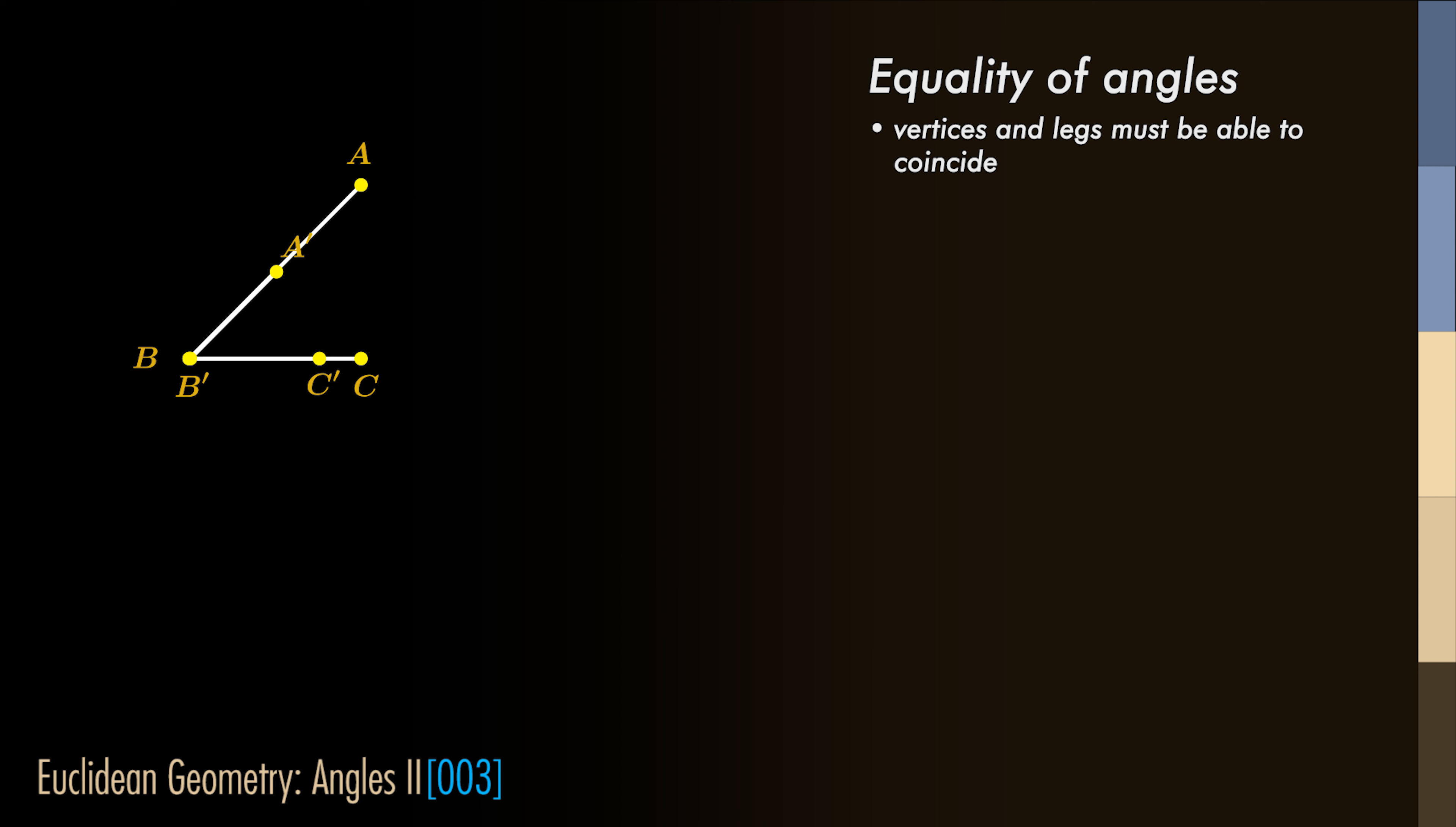But as we do not consider the directionality of the angle, we can also place B'C' on BA, and B'A' on BC.